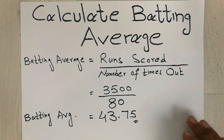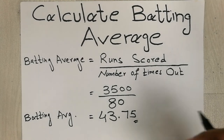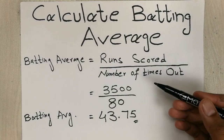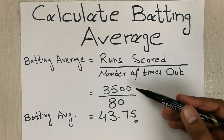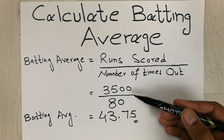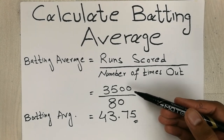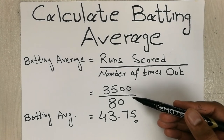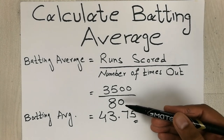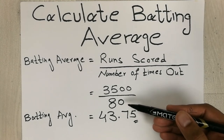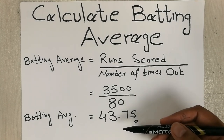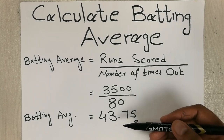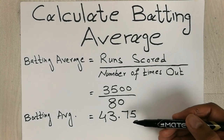All you need to know is how much runs you scored and how many times you were out. For example, I put 3500 as my total runs and I was out 80 times. When we do this division we get our answer, which is 43.75.